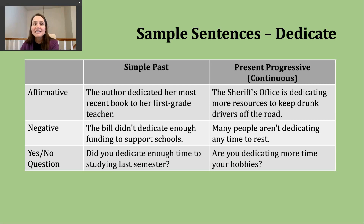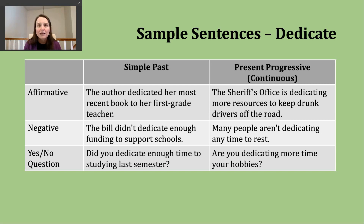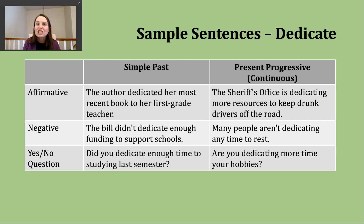To make a yes/no question in the simple past, start with 'did,' then the subject, then the base verb. Notice that in both the negative and yes/no question forms, you don't use the '-ed' form — only in the affirmative. Example: 'Did you dedicate enough time to studying last semester?' This might be a question you ask yourself as a new semester begins.